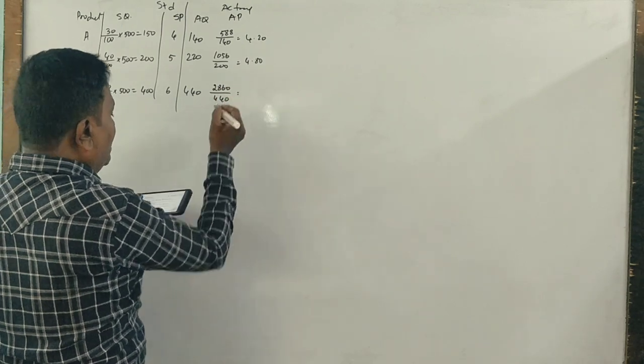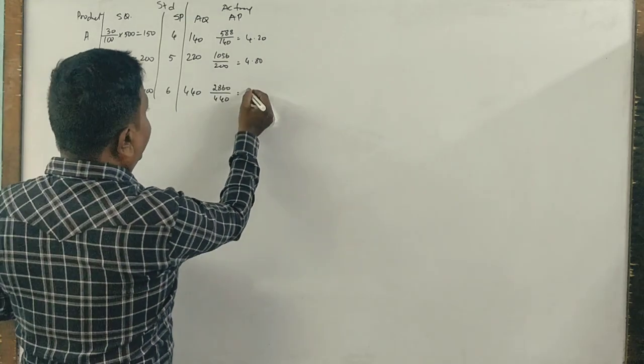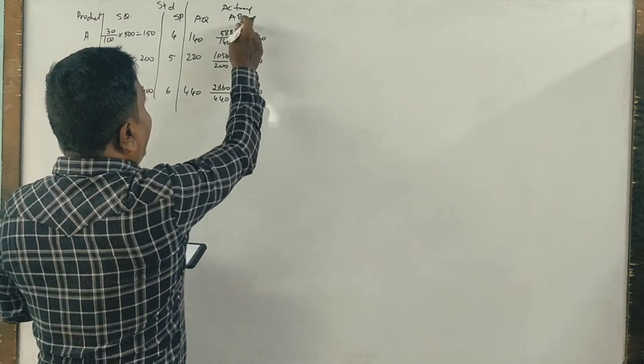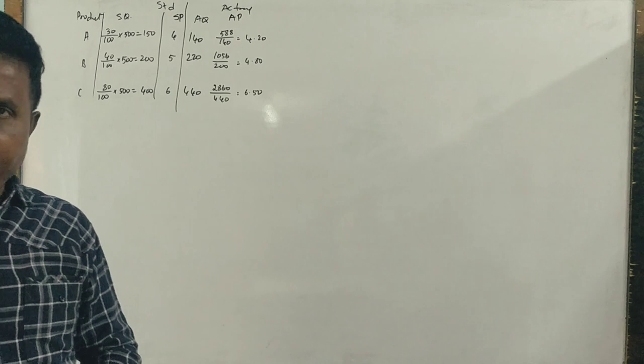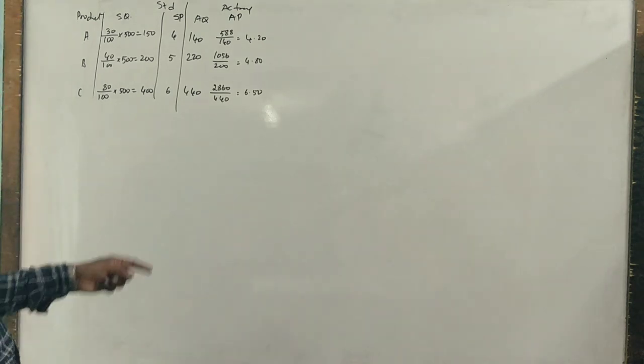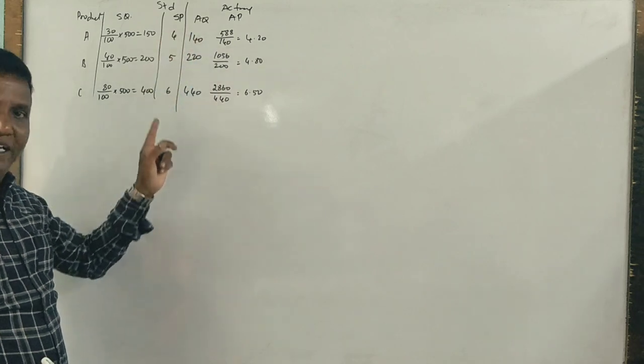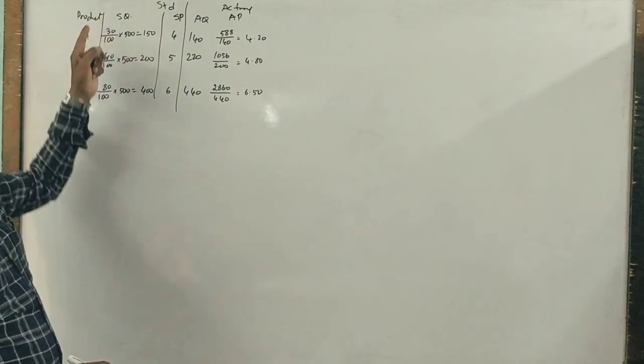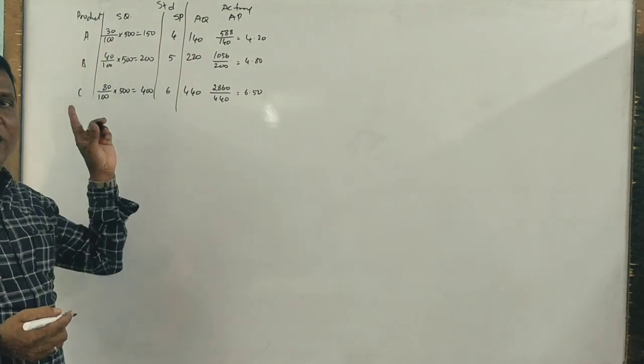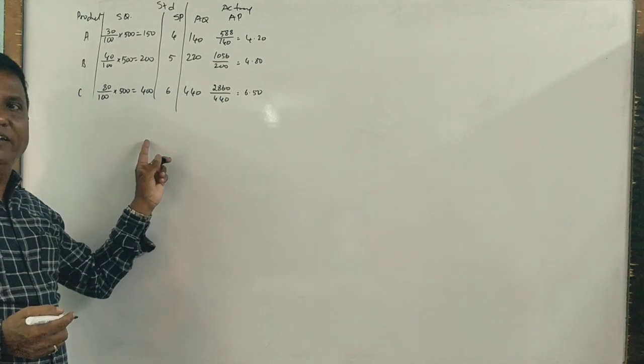Now actual price - it was not given, we calculated it. Actual quantity is given, standard price is also given, but standard quantity was not given for 100 units - we calculated for 500 units.